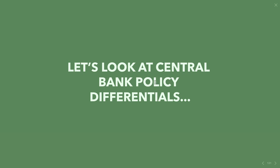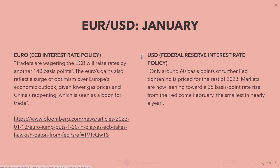Let's look at central bank policy differentials — that's what we're ultimately trading in currency land. For the euro dollar, the most traded currency in forex, we're comparing Europe's GDP, inflation, and interest rates with the US data, looking at where the differentials are. If one central bank is very hawkish — likely to hike interest rates — compared to a currency whose central bank is dovish — likely to hold or cut — there's a differential. Hiking interest rates appreciates the currency; cutting rates devalues it. The biggest divergence is when one central bank is hiking and another is cutting.